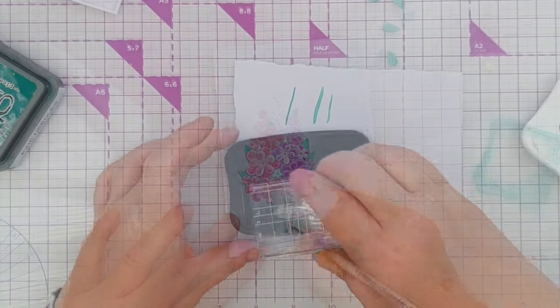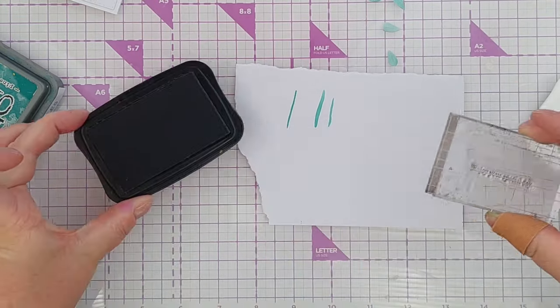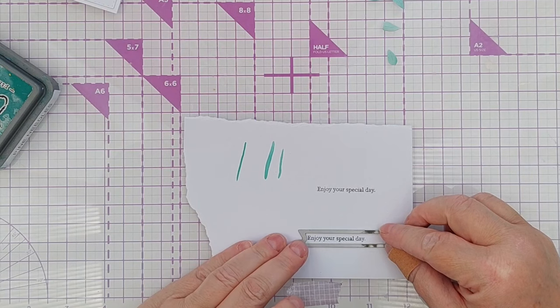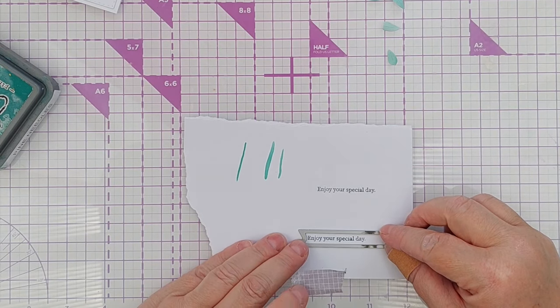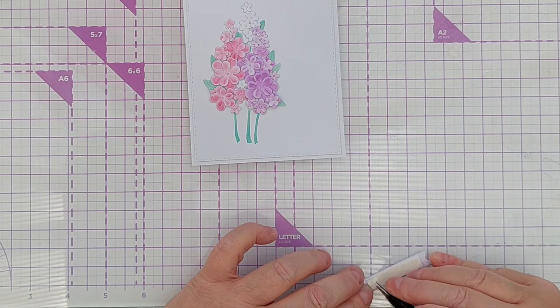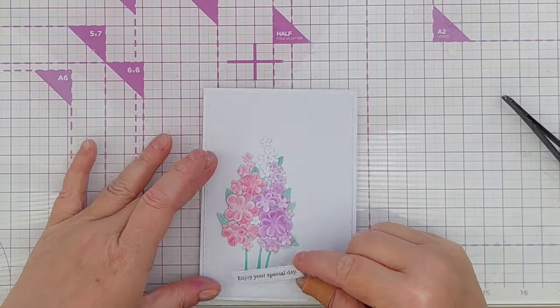For my sentiment I stamped enjoy your special day in black ink on a piece of smooth white cardstock and die cut it out with a stitched banner die. I then used a piece of craft foam to stick this over the stems underneath the flowers on my card panel.